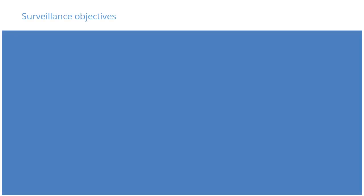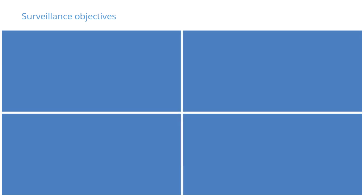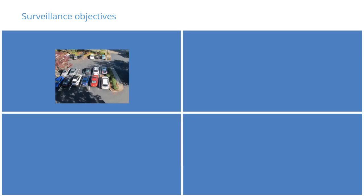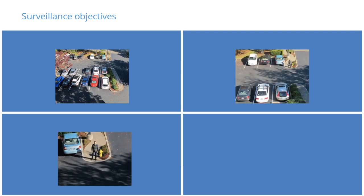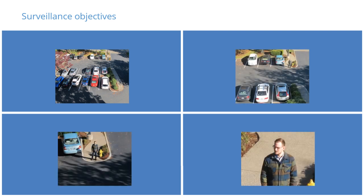Now let's talk about surveillance objectives. To determine the appropriate devices for a given surveillance situation, you must consider the surveillance objective. Depending on the situation, you'll want to have specific levels of image quality, which usually include the following: overview, general surveillance, recognition, and identification.